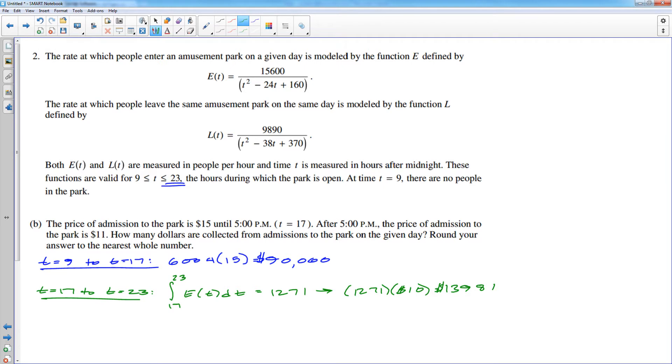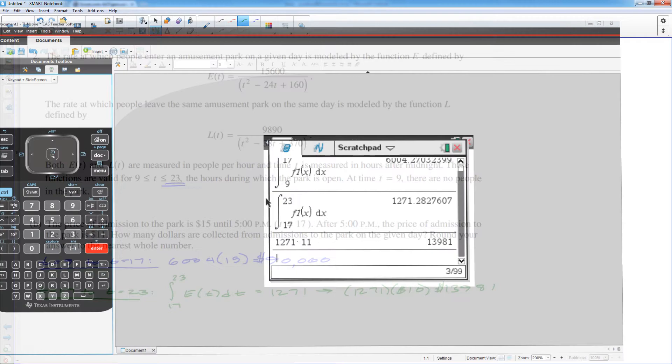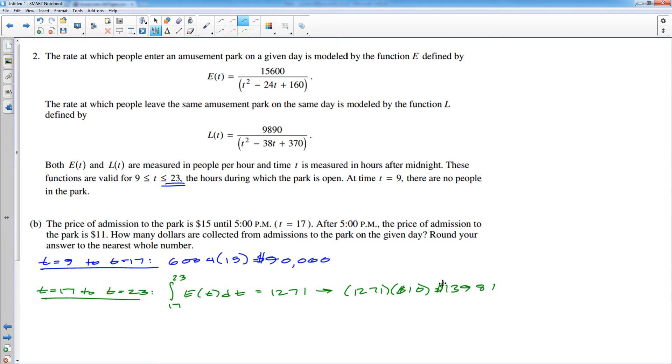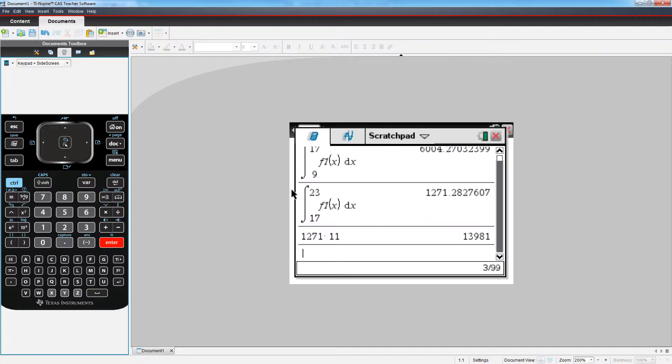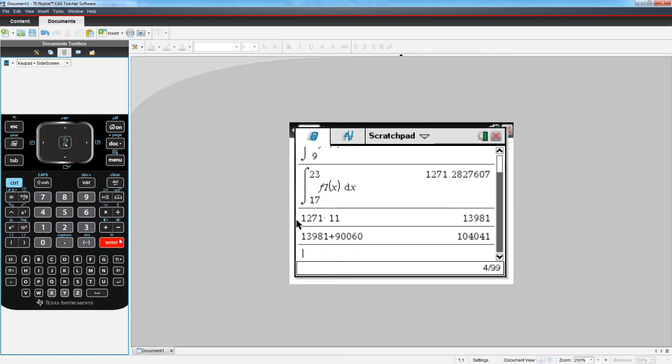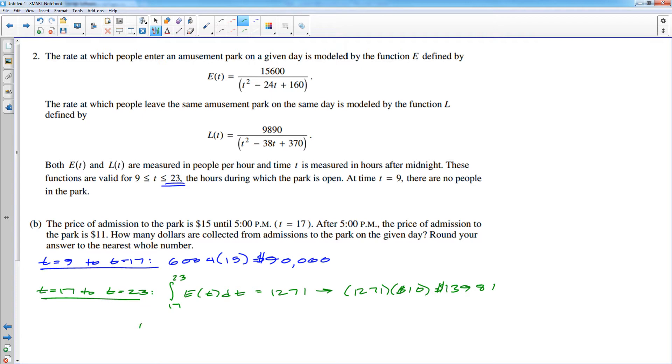Did I punch that integral in correctly? Yeah. And then we'll simply add those two. So 13,981 plus 90,060. And you get a total income of $104,041. So the total on the interval 9 to 23 was $104,041. And there's your answer.